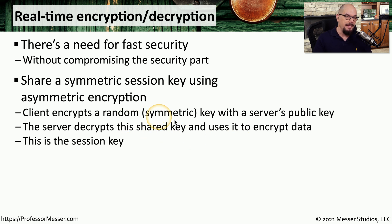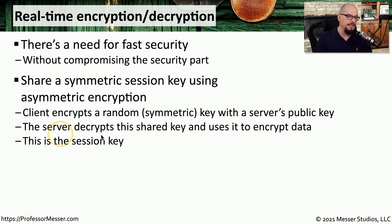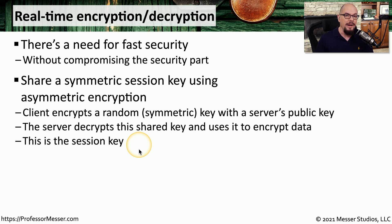The client would take the symmetric key — which would be the plain text — and encrypt it using a server's public key to create the ciphertext. That ciphertext is then sent to the server. The server is then able to decrypt that ciphertext using its private key, which gives it access to the session or symmetric key that was originally created. This means we can transfer the symmetric key across the network in an encrypted form, using asymmetric encryption to transfer a symmetric key.